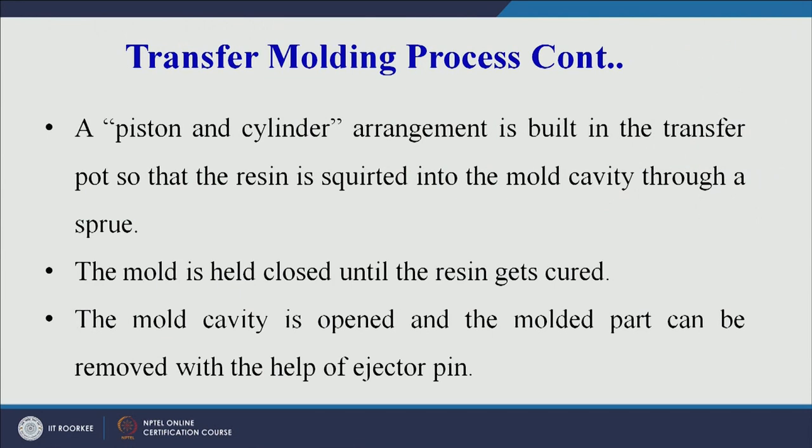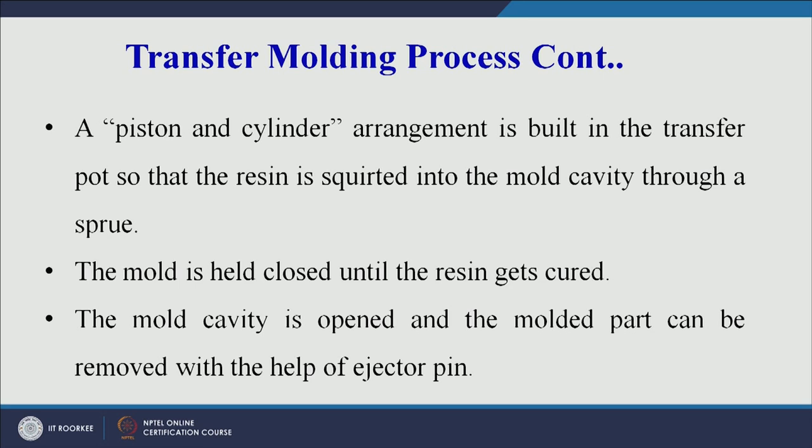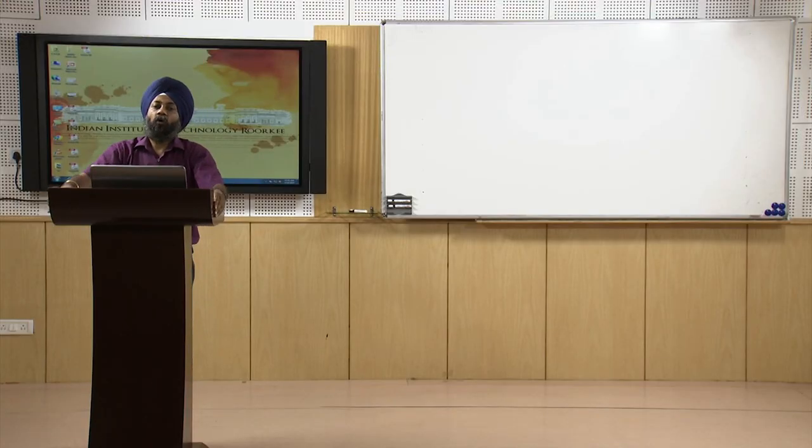The plastic travels through the sprue into the mold cavity. The mold is held closed until the resin is fully cured and solidified into the final product form. Once curing is complete, the two mold halves open. The ejector pin gives a slight tap on the product and it is pushed out from the bottom half of the mold cavity.